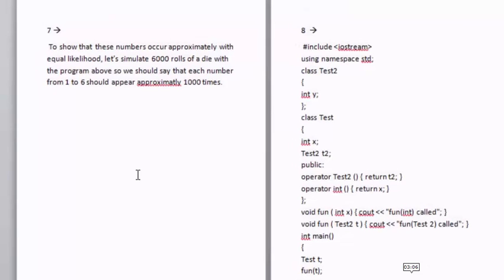This is the seventh question: to show these numbers occur with approximately equal likelihood, let's simulate six thousand rolls of a die with the program above. We should see that each number from one to six should appear approximately one thousand times. This is a good programming question, so please do it. If you have any doubt, you can ask me. I will be there for you.